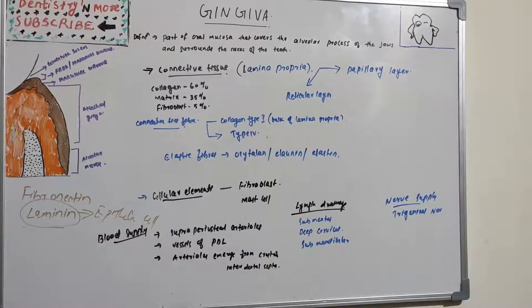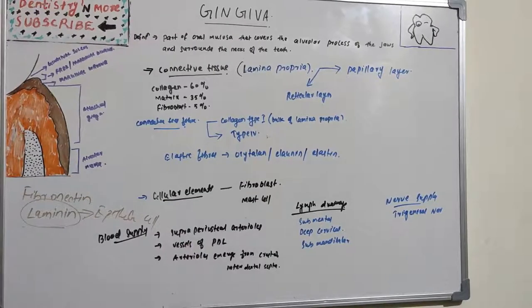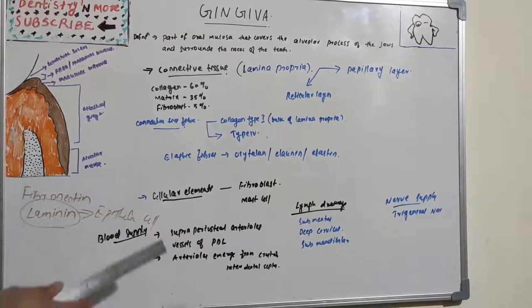The cellular elements include fibroblast, which is a major element of mesenchymal origin and plays a major role in the development, maintenance, and repair of gingival connective tissue. They synthesize collagen and elastic fibers as well as the glycoproteins and glycosaminoglycans.